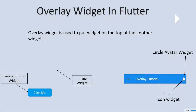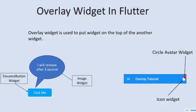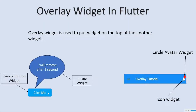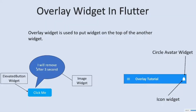In this example, we have an icon widget, and at the top of the icon widget, a circle avatar widget is floating. Let us see another example — we have this elevated button, and when we press this elevated button, we can see an image widget is showing. Let us see how we can achieve these types of animations in our Flutter app.